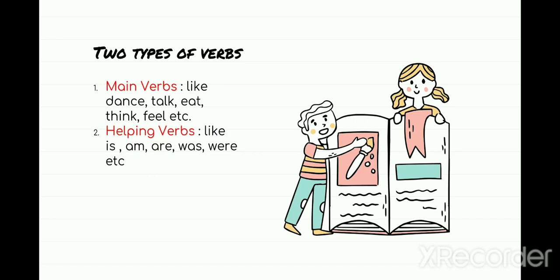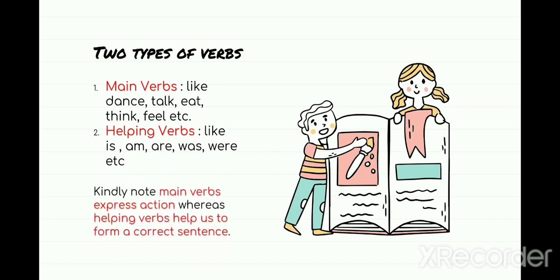I hope the two types of verbs are clear to everyone. Kindly note: main verbs like dance, talk, eat will show the action, while your helping verbs will help to form a correct sentence. As you saw in the skit earlier, Ayaan was using the wrong helping verb — he kept saying 'there was somebody at the gate.' I thought that person had gone, but actually the person was still waiting downstairs. So 'there is' should have been used. That's why it is very important to use the correct helping verbs.